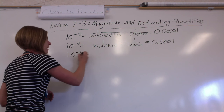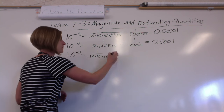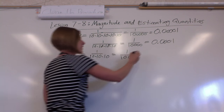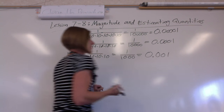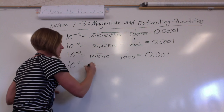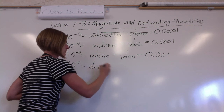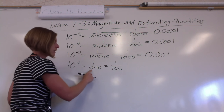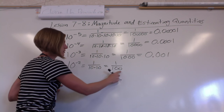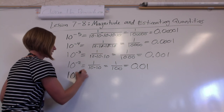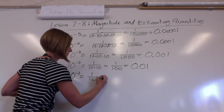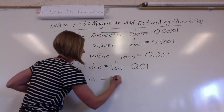If you're seeing a pattern, 1 over a thousand is 10 to a negative 3. 0.001. 10 to a negative 2 is 1 over two tens, which is 1 over a hundred. And I know it's a hundred because I have two zeros here, two zeros here. Then 10 to a negative 1 is 1 over 10, which is just one tenth.